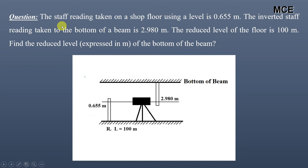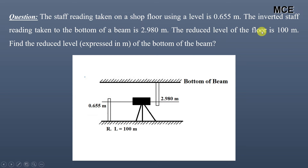The question states that the staff reading taken on a shop floor using a level is 0.655 meter. The inverted staff reading taken to the bottom of a beam is 2.980 meter. The reduced level of the floor is 100 meter. We have to find the reduced level of the bottom of the beam.